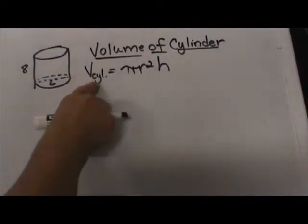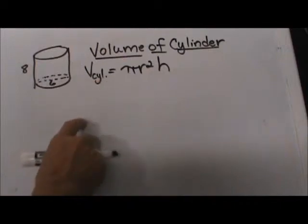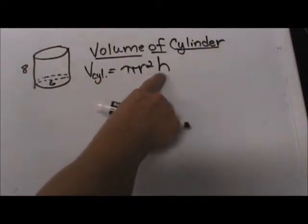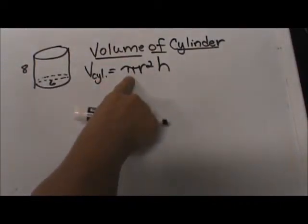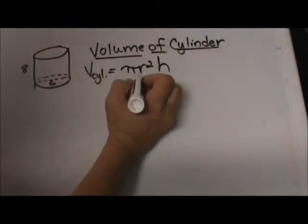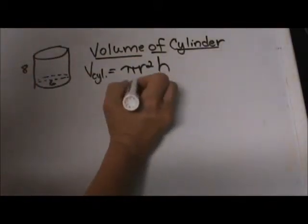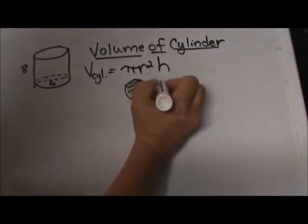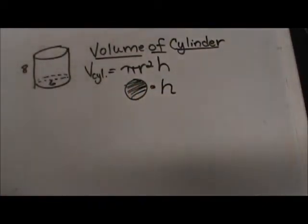The volume of a cylinder is equal to pi r squared times h, where pi r squared is the area of the base because the base is a circle, times the height of the object.